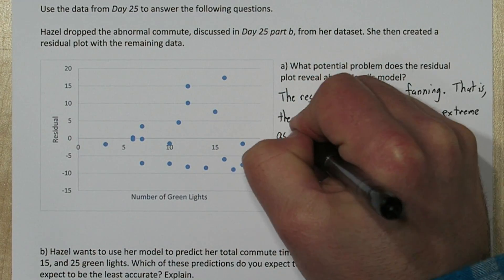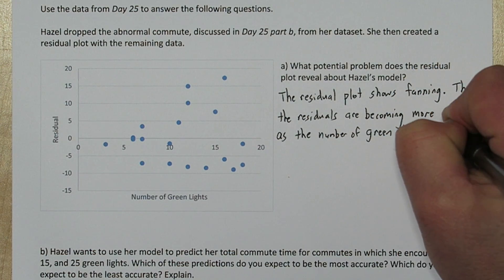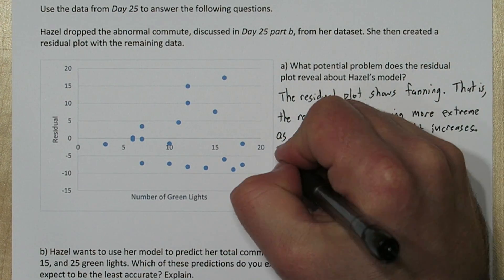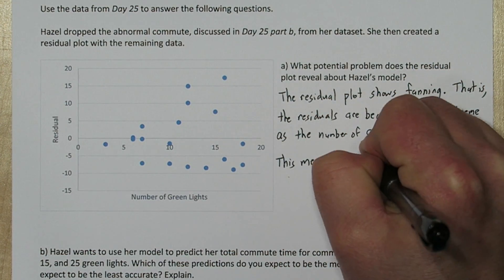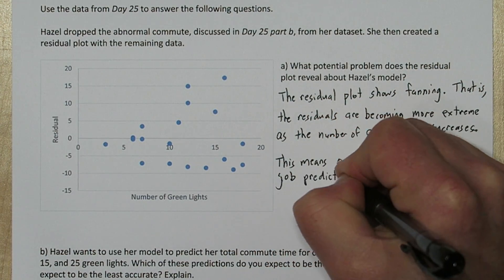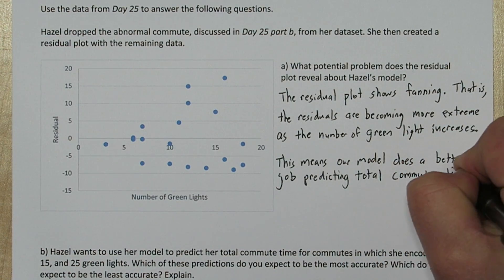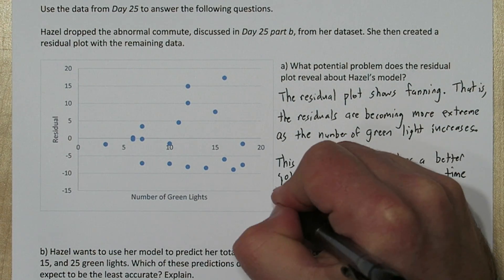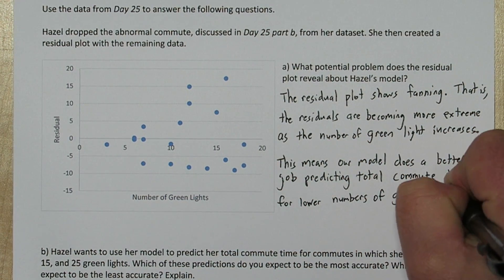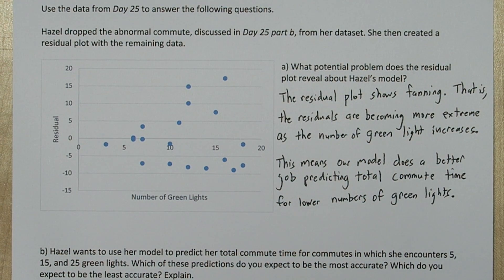That is, the residuals are becoming more extreme as the number of green lights increases. This means our model does a better job predicting total commute time for lower numbers of green lights. In Part B, we're trying to figure out which of our predictions would be best for 5, 15, or 25 green lights.